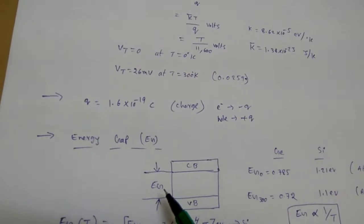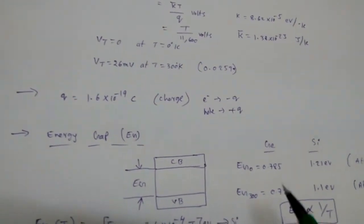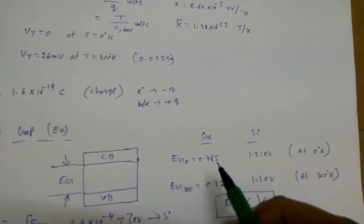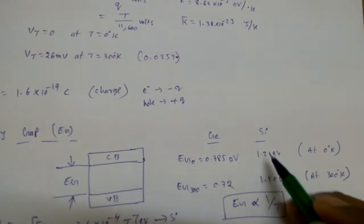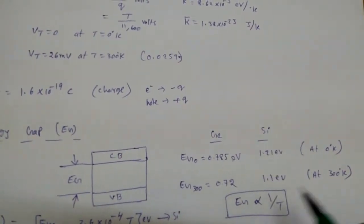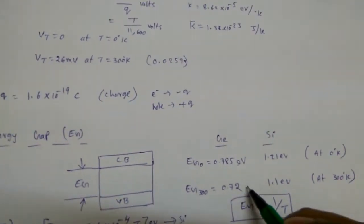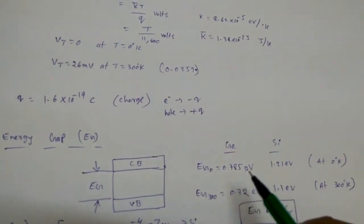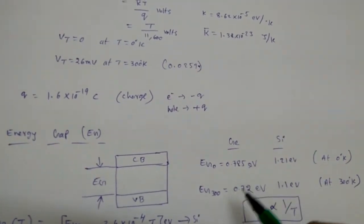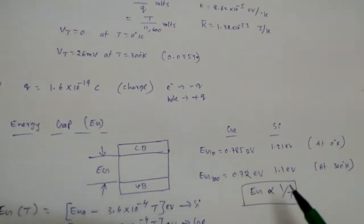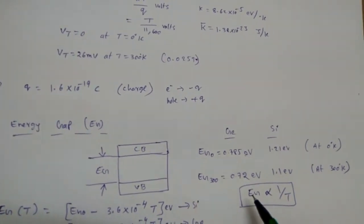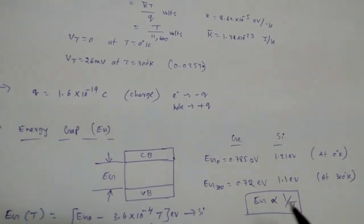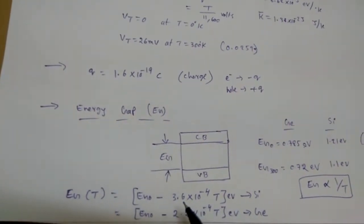For germanium at 0 K the energy gap is 0.785 eV, and for silicon at 0 K it is 1.21 eV. At 300 K, germanium has an energy gap of 0.72 eV and silicon has 1.1 eV. In the exam they may ask the energy gap at 300 K for silicon or germanium. Also, energy gap is inversely proportional to temperature — if temperature increases, energy gap decreases.